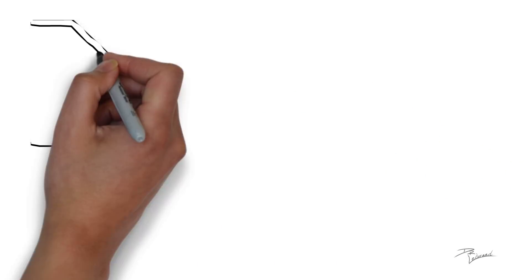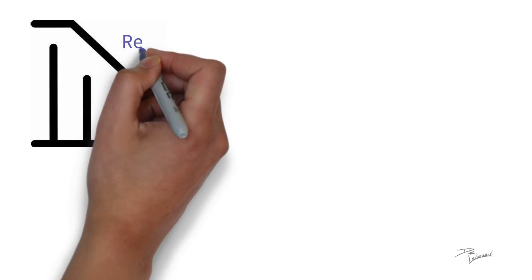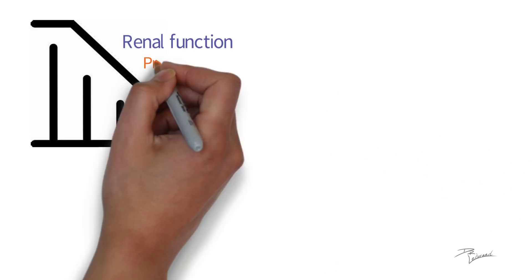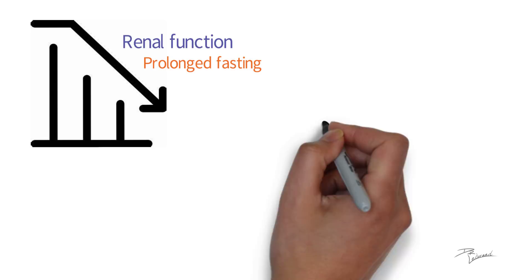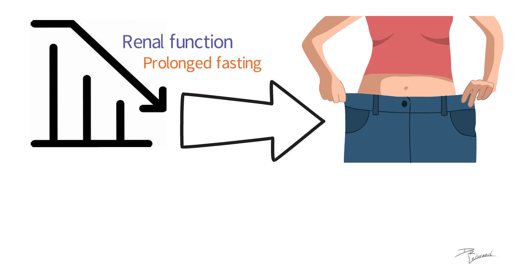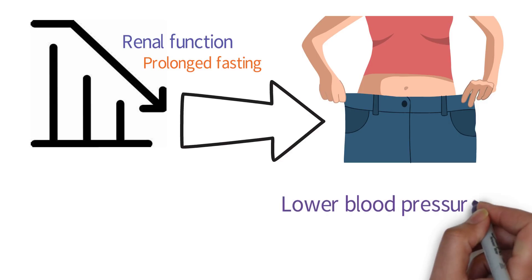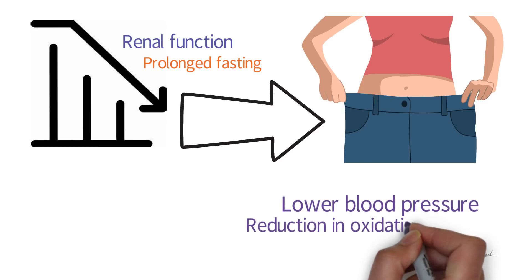Thus, the study concluded that a slight decrease in renal function exists with prolonged fasting. At the same time, however, reduced body weight as well as lower blood pressure and a significant reduction in oxidative stress were noted.